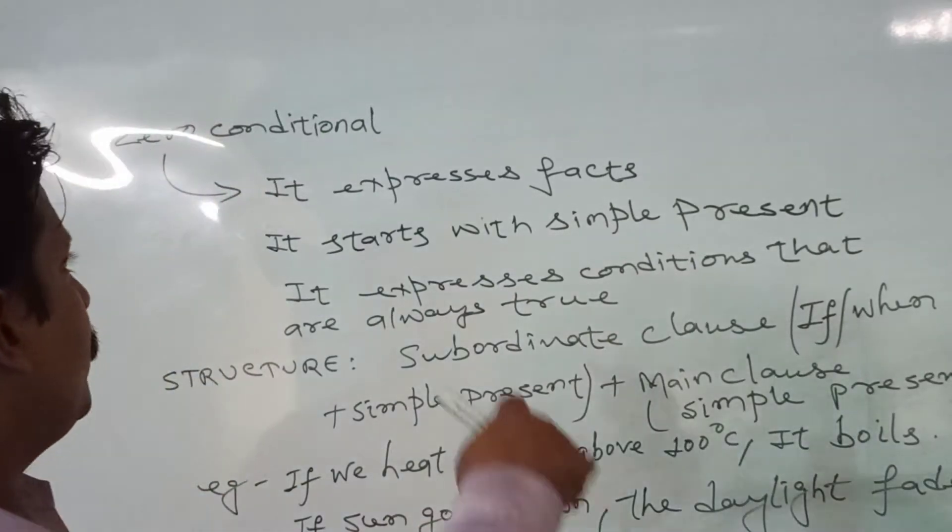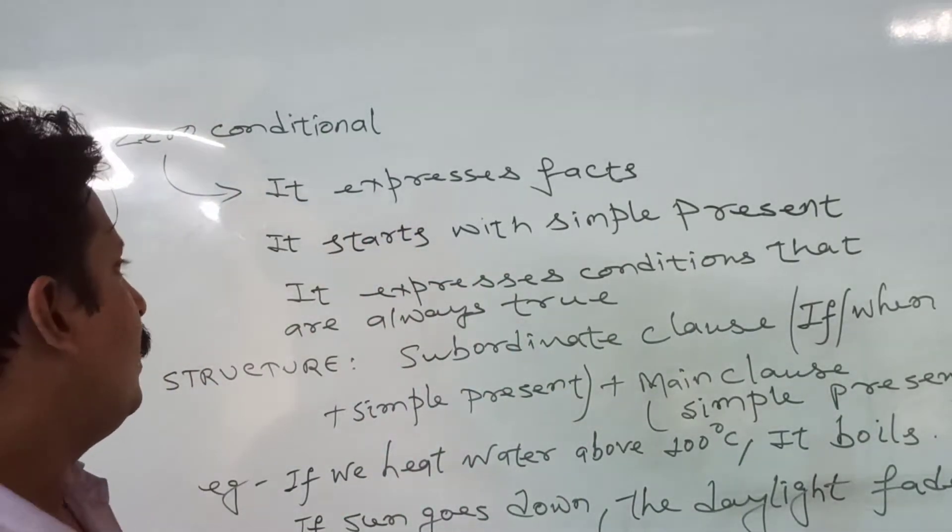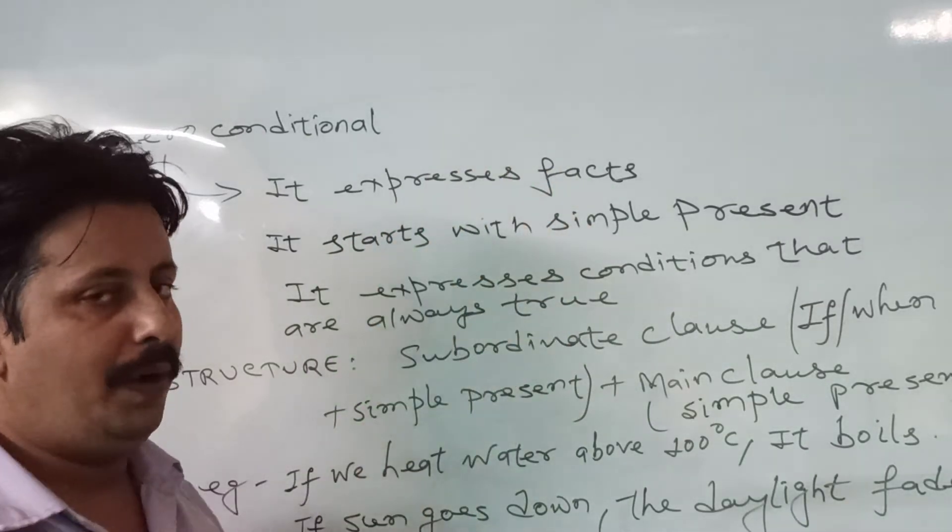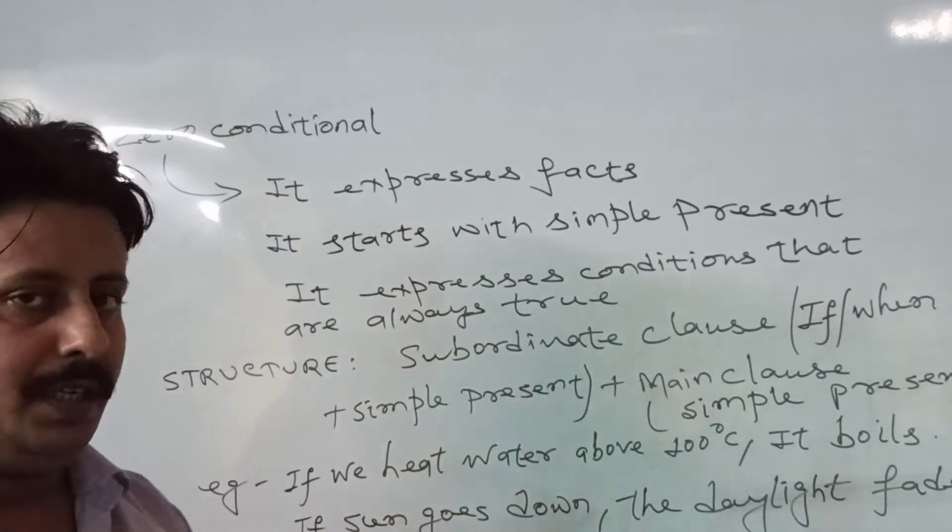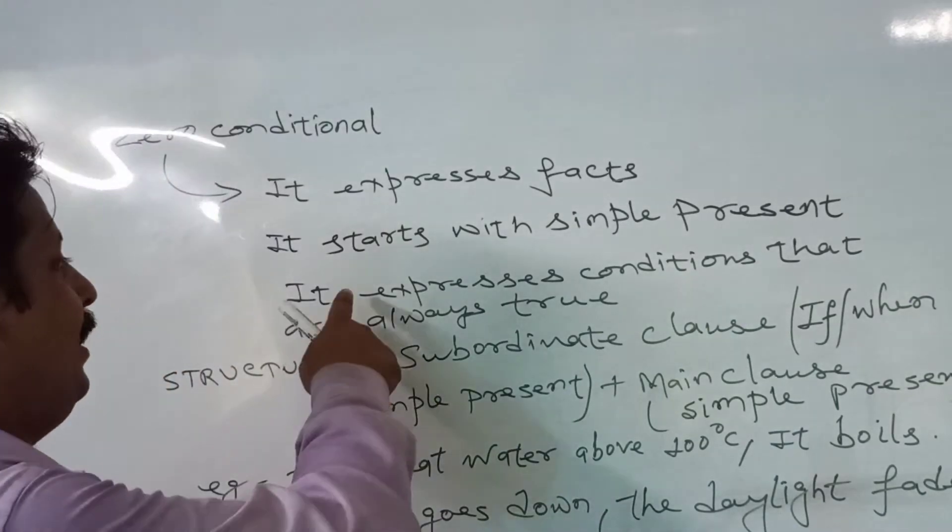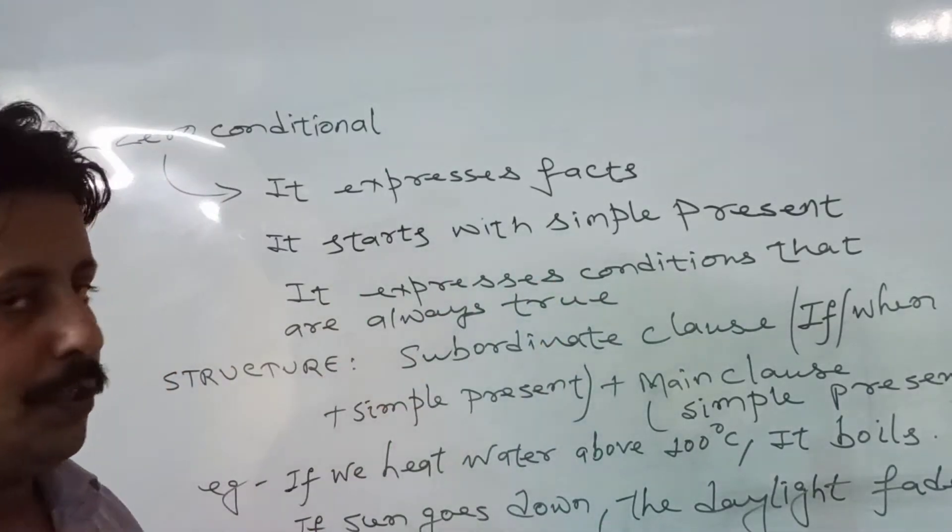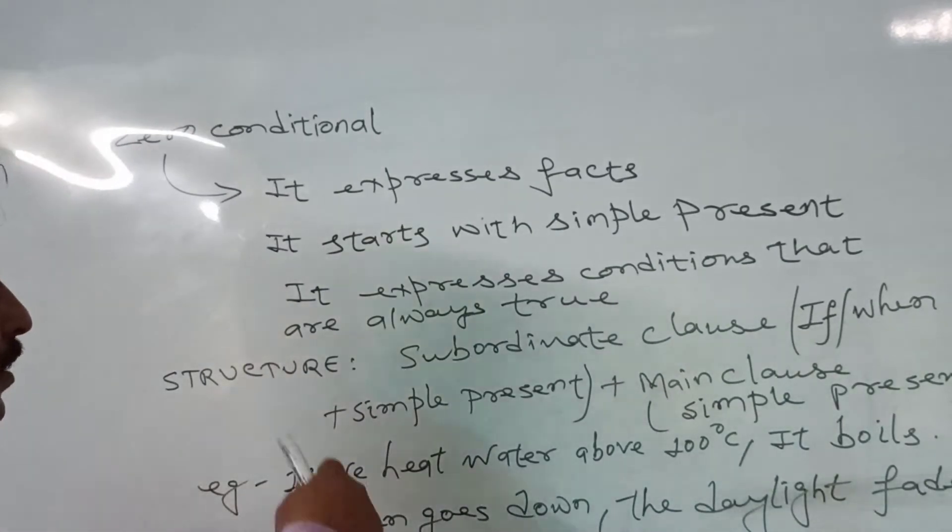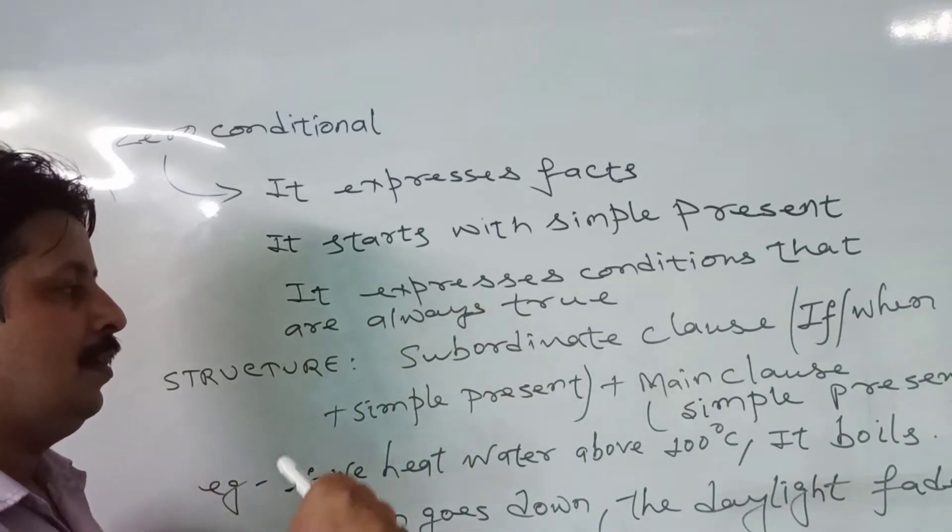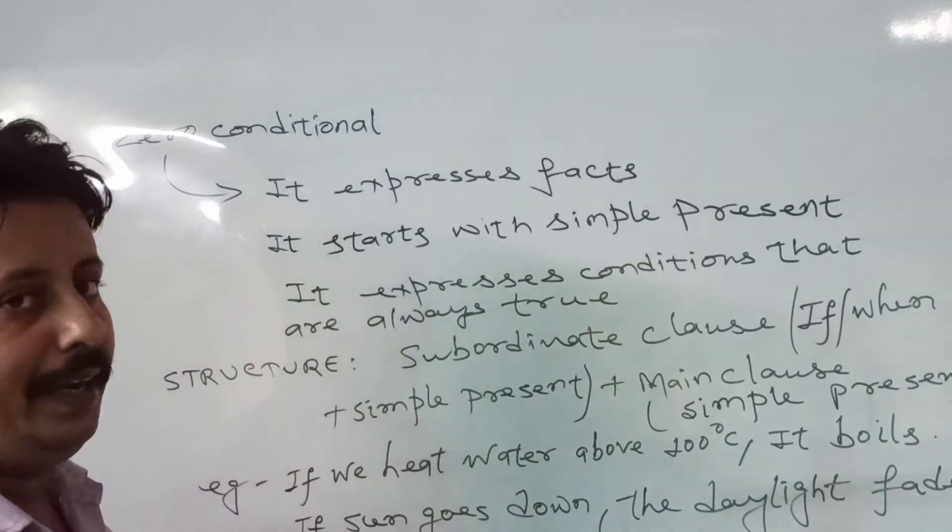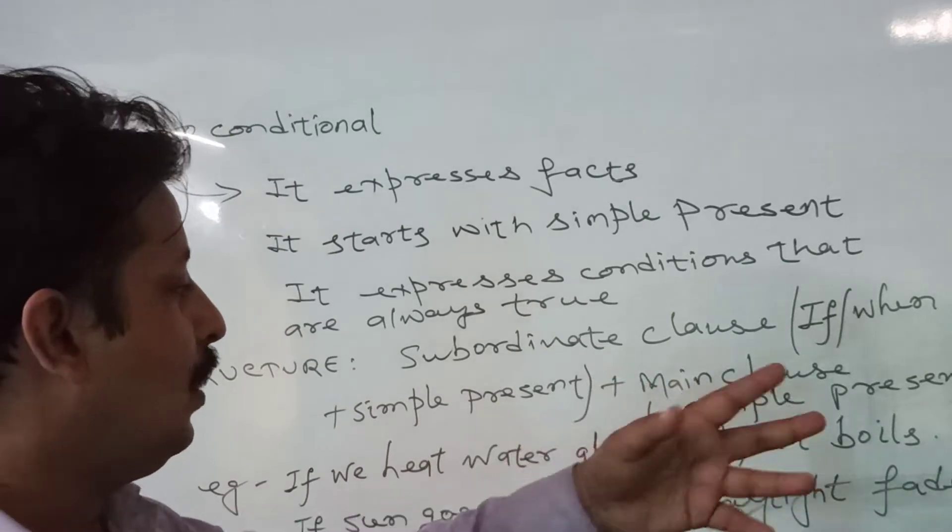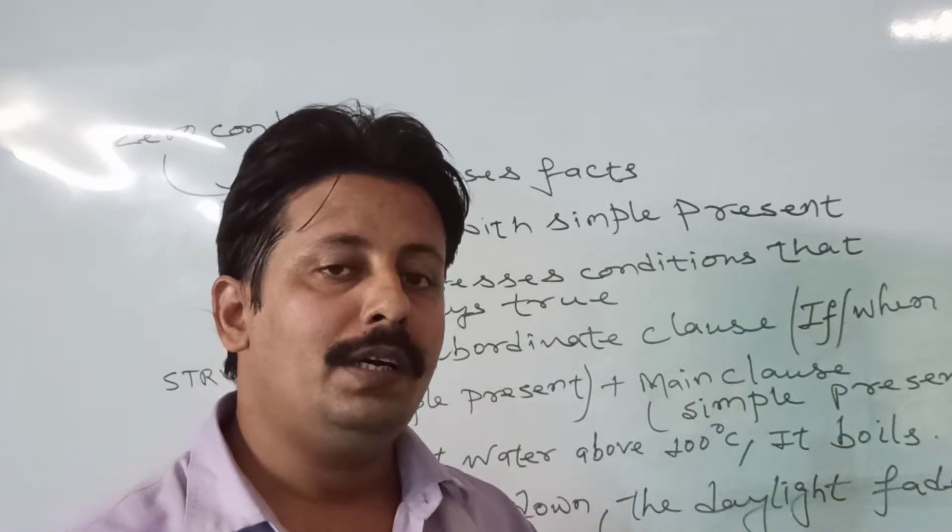Now let us see zero conditional, type zero. That is to represent facts - it expresses facts. It starts with simple present. Whenever you see that the subordinate clause also is in simple present, it expresses conditions that are always true. Then you can see here the structure will be subordinate clause plus main clause. Subordinate clause will contain if or when with simple present.